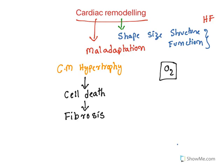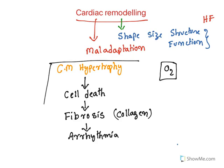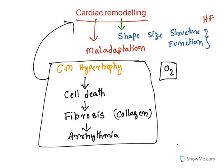This scar tissue or fibrotic tissue is majorly made up of collagen. This collagen does not have the ability to contract, and hence it also results in errors in rhythm, known as arrhythmia. So all these changes are known as cardiac remodeling: cardiac muscle hypertrophy results in cell death, cell death causes fibrosis, and finally results in arrhythmia.